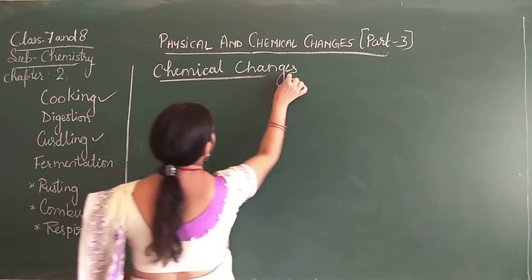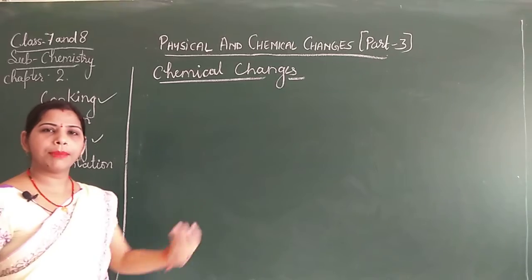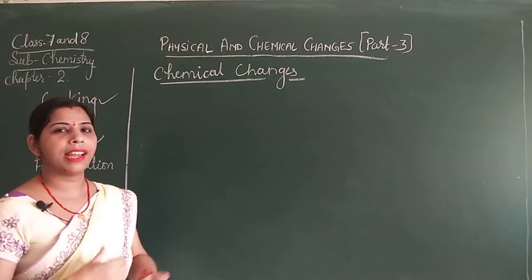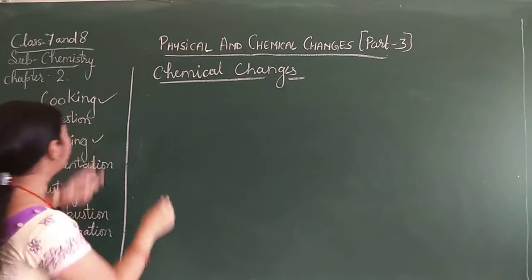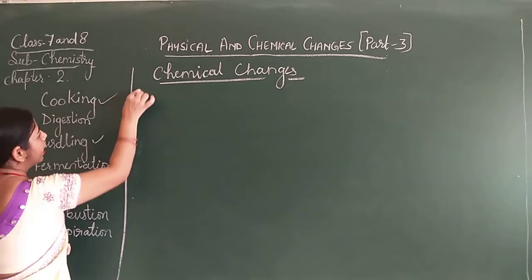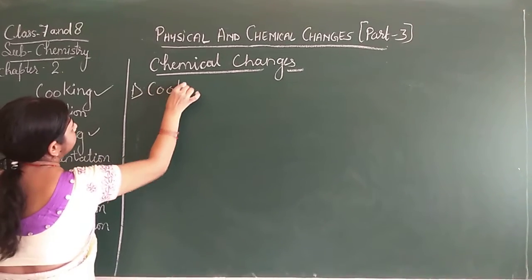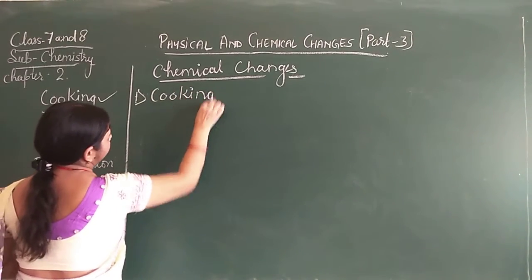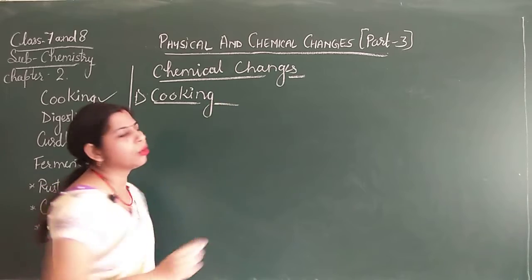So let's start with chemical changes — that means the changes in which the shape, size, and substance of a substance can be completely changed.